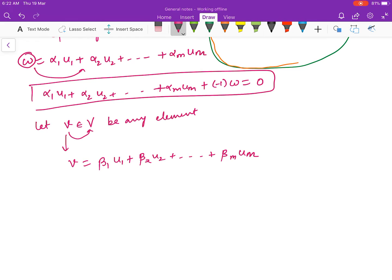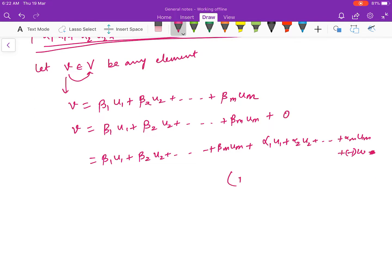There is no problem if I add 0 on the right hand side. In place of 0, I can put this value from the starred equation. So I have β1·u1 + β2·u2 + ... + βm·um + α1·u1 + α2·u2 + ... + αm·um - 1·w.